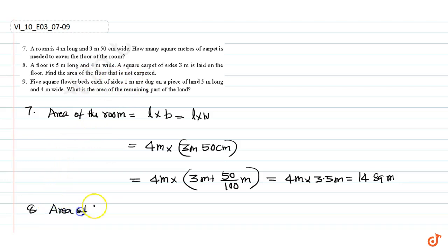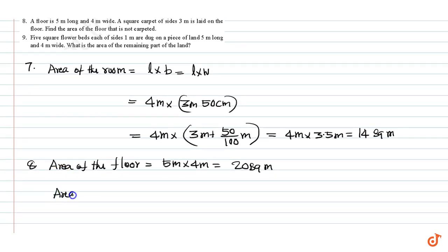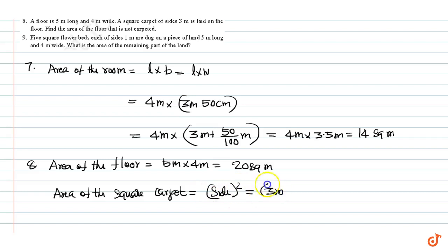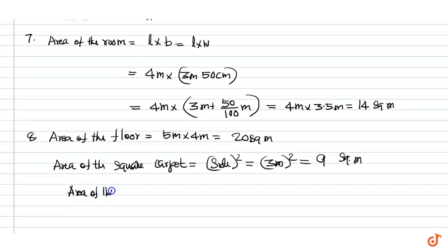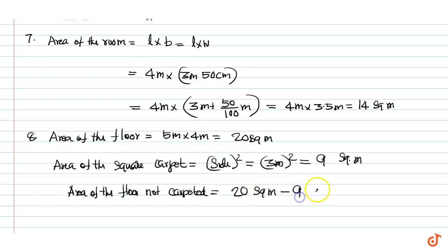First we will find out the area of the floor. The area of the floor not carpeted is equal to 20 square meters minus 9 square meters, equal to 11 square meters.